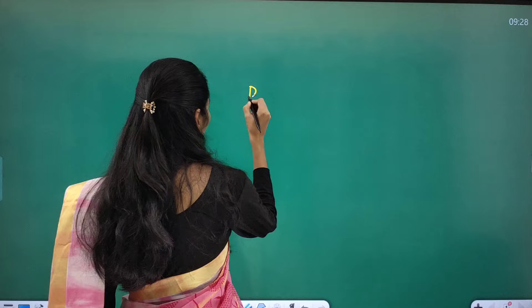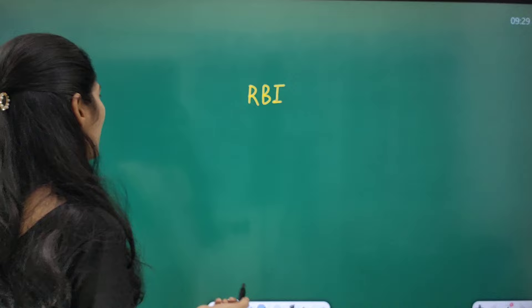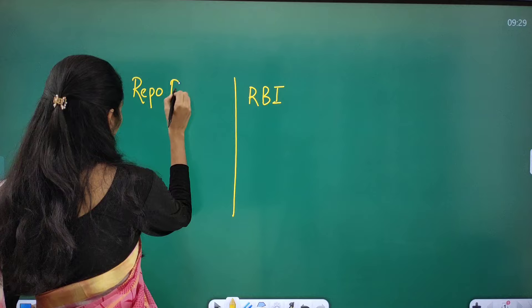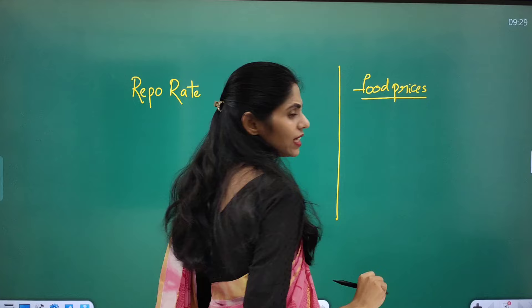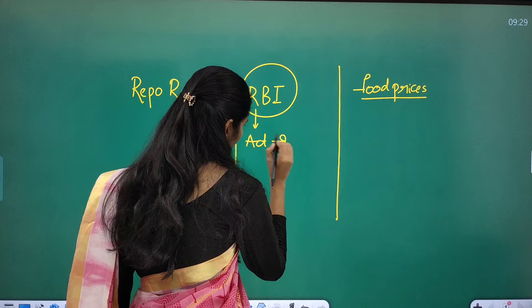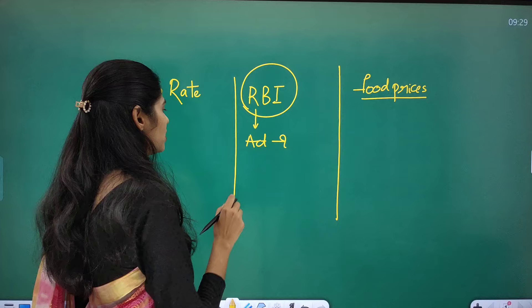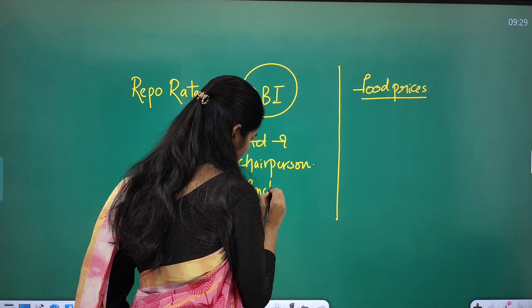There are three keywords here. First is RBI — the Reserve Bank of India, the Central Bank of India. The article discusses repo rate and food prices. From an RBI point of view, you have to see which act led to the formation of RBI, along with the year, who are the chairpersons, and what are the functions of RBI.